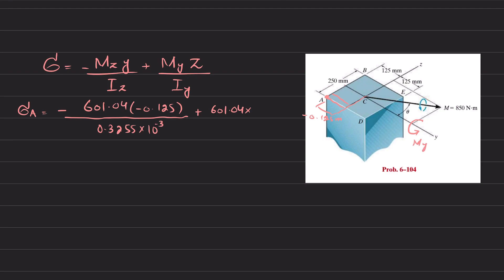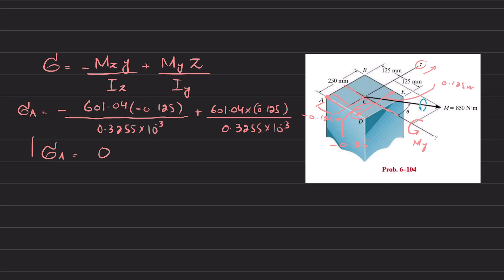The z-distance for point A: since point A is in the negative z-direction, that distance is −0.125 m. So the second term is 601.04 × (−0.125) / (0.325 × 10⁻³). When you calculate it, sigma A equals 0.